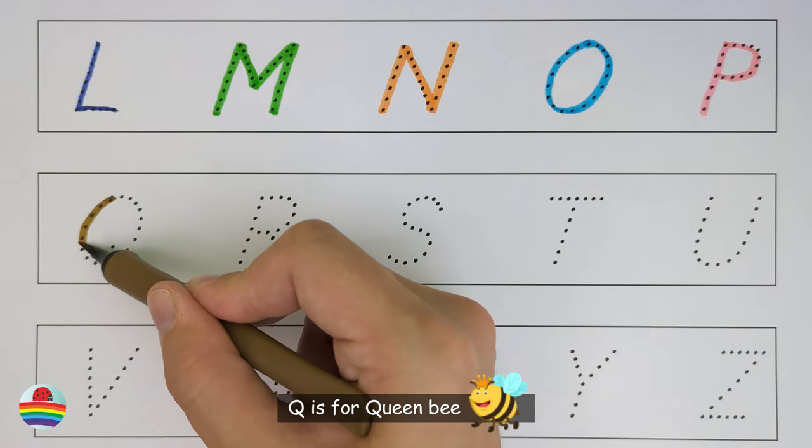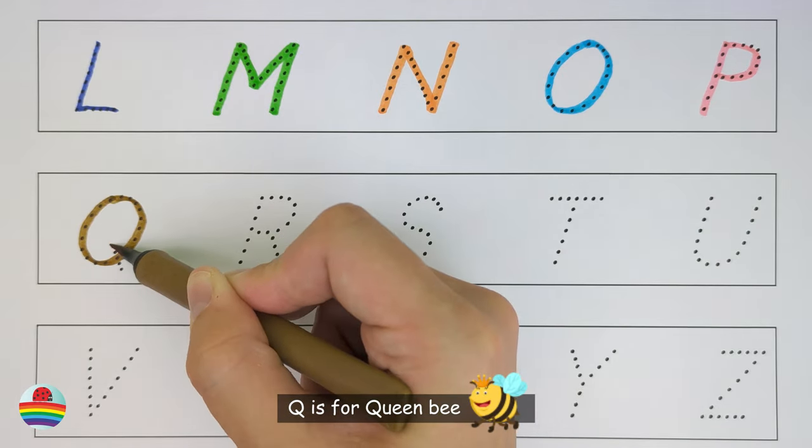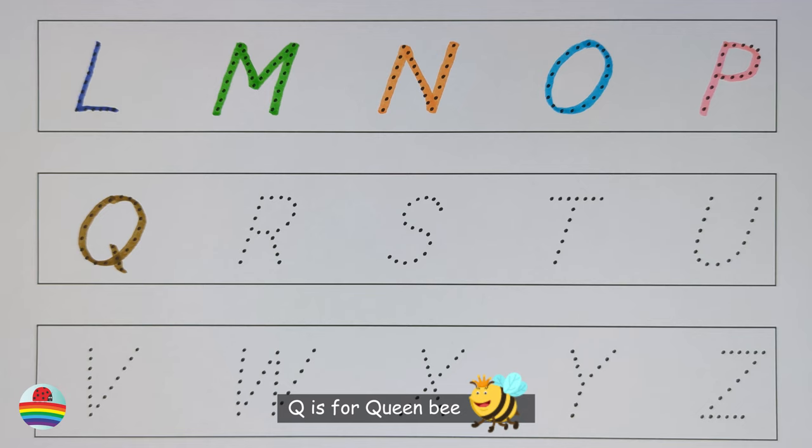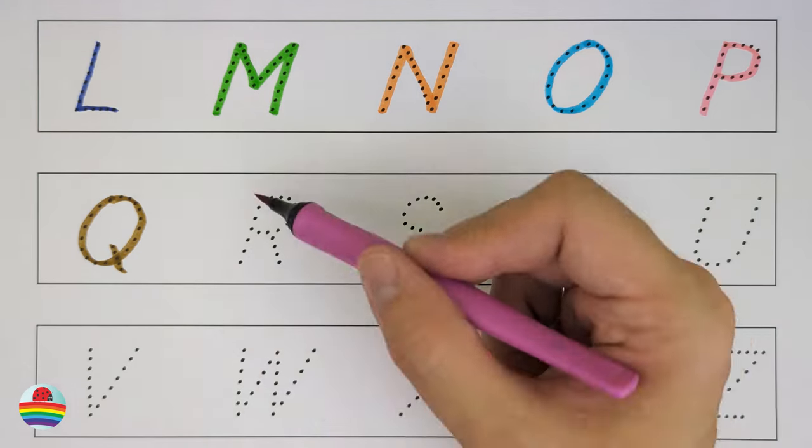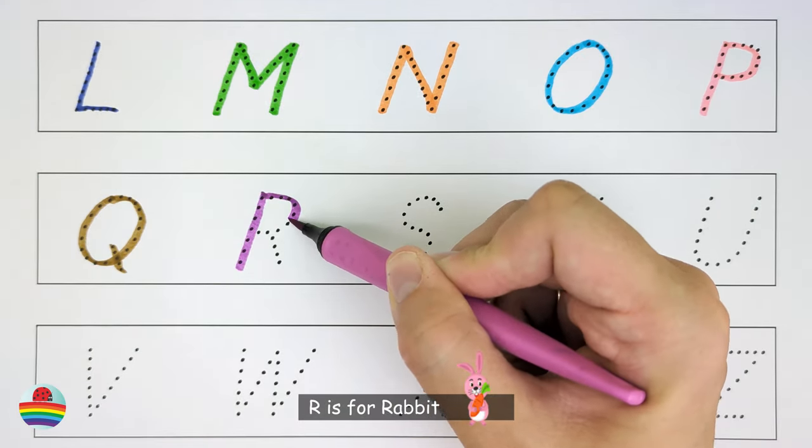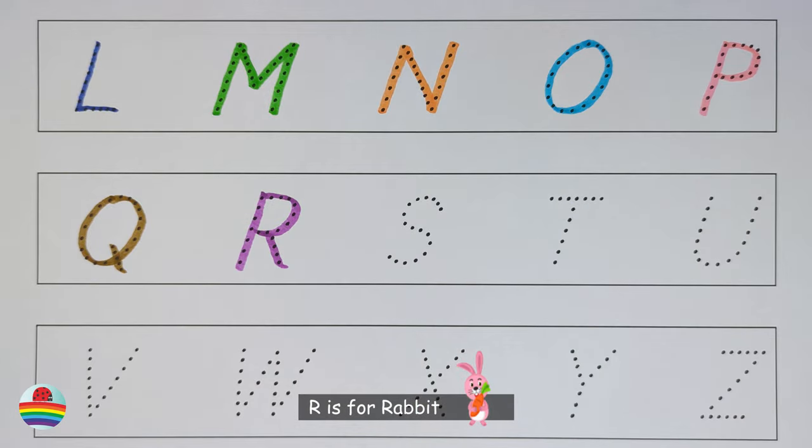Q. Q is for queen bee. Q. R. R is for rabbit. R.